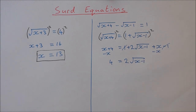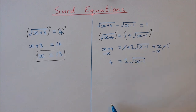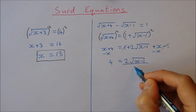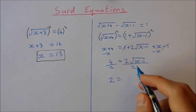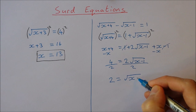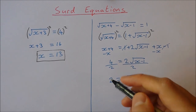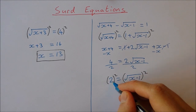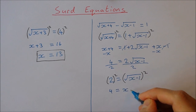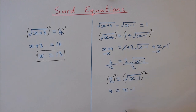There are two approaches from here. The first is to divide both sides by 2: 4 divided by 2 is 2, and 2 root x minus 1 divided by 2 is root x minus 1. Now squaring both sides gives 2 squared equals 4, equal to x minus 1. Adding 1 to both sides gives x equal to 5.